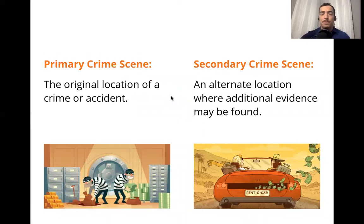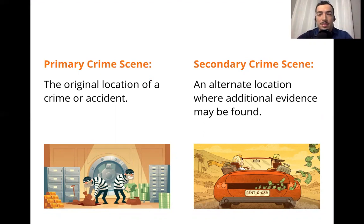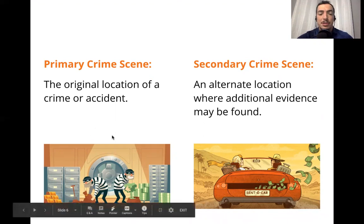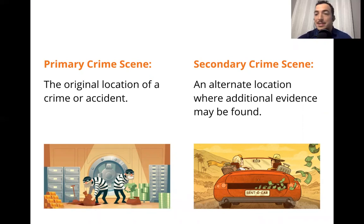We can break down the crime scene into two parts: a primary crime scene and a secondary crime scene. The primary crime scene is the original location of a crime or accident — and it's important to point out that it doesn't just have to be a crime, it can also be an accident, like two cars crashing into each other. Using a bank robbery example — two bank robbers trying to steal money from the bank — the bank becomes the primary crime scene, the original location where the crime occurred.